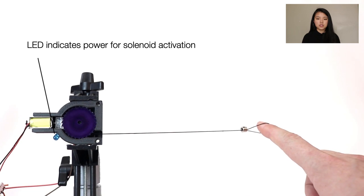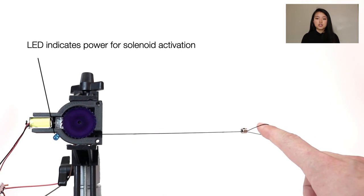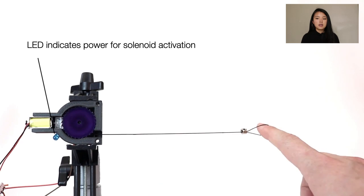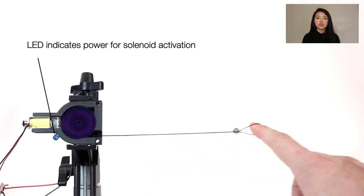Force exerted by the user on the string keeps the ratchet engaged, and thus the solenoid can be unpowered after a brief interval. Only when the user withdraws their hand is the pawl released, and the spring can retract any string slack.